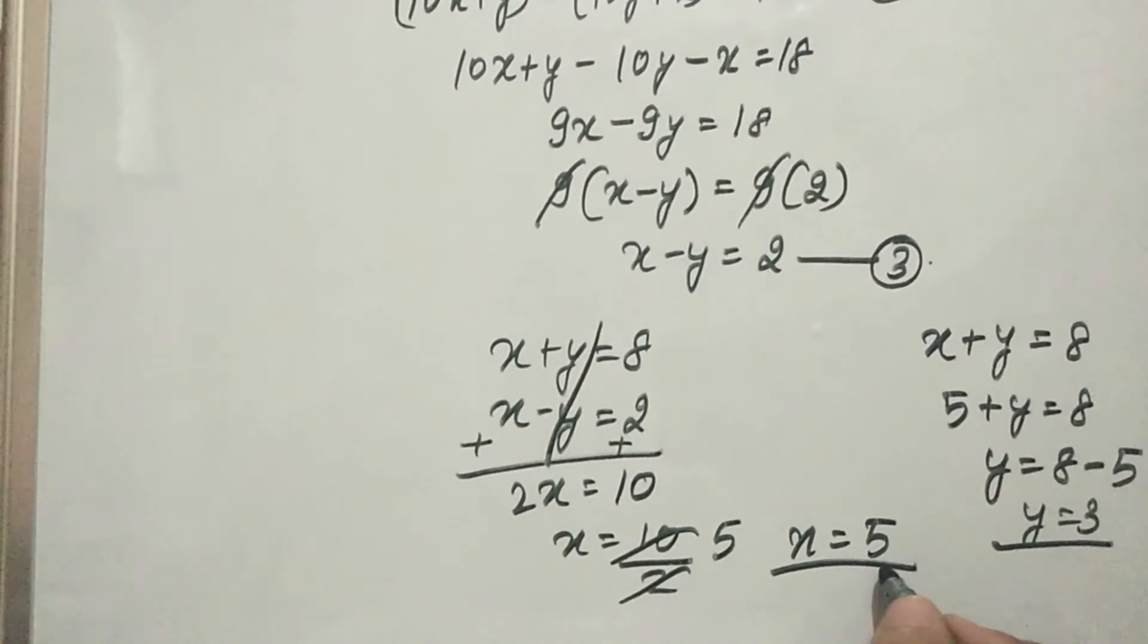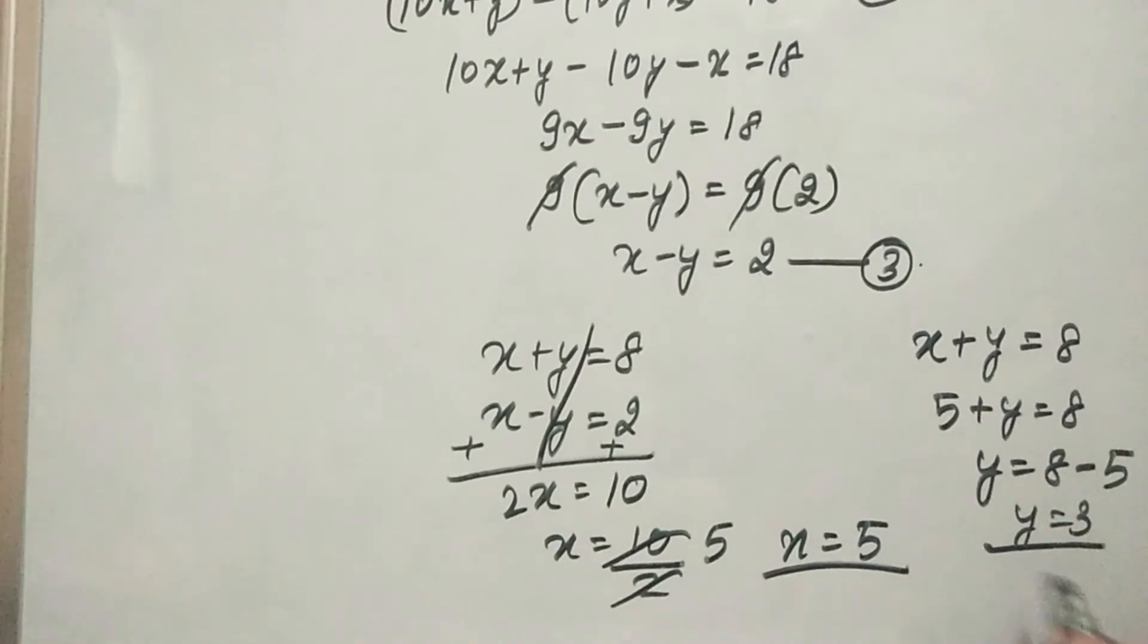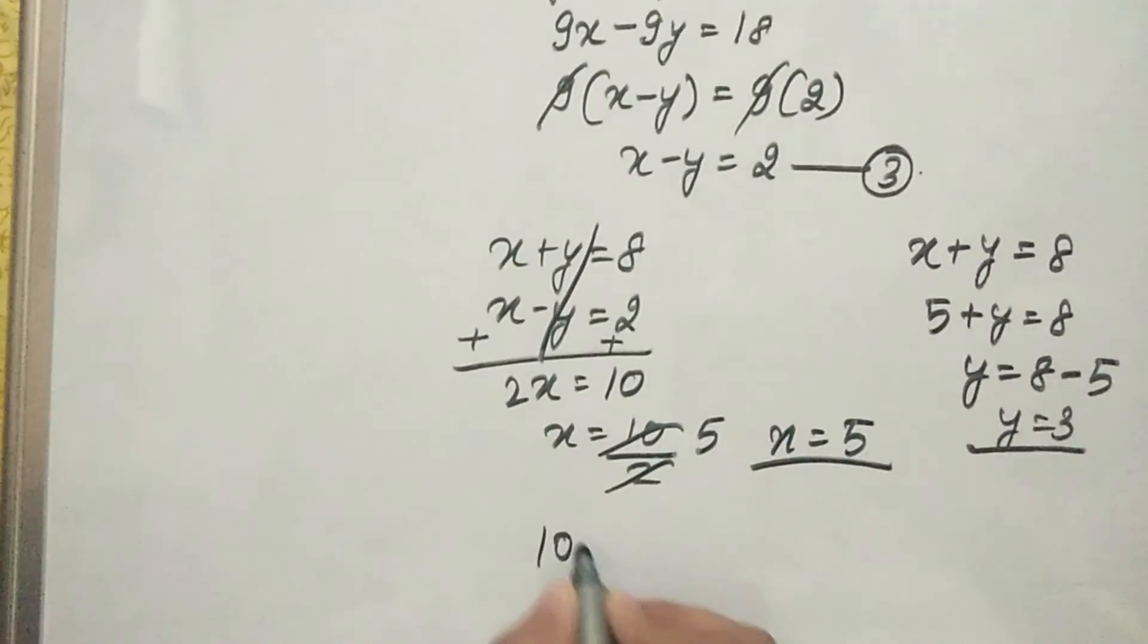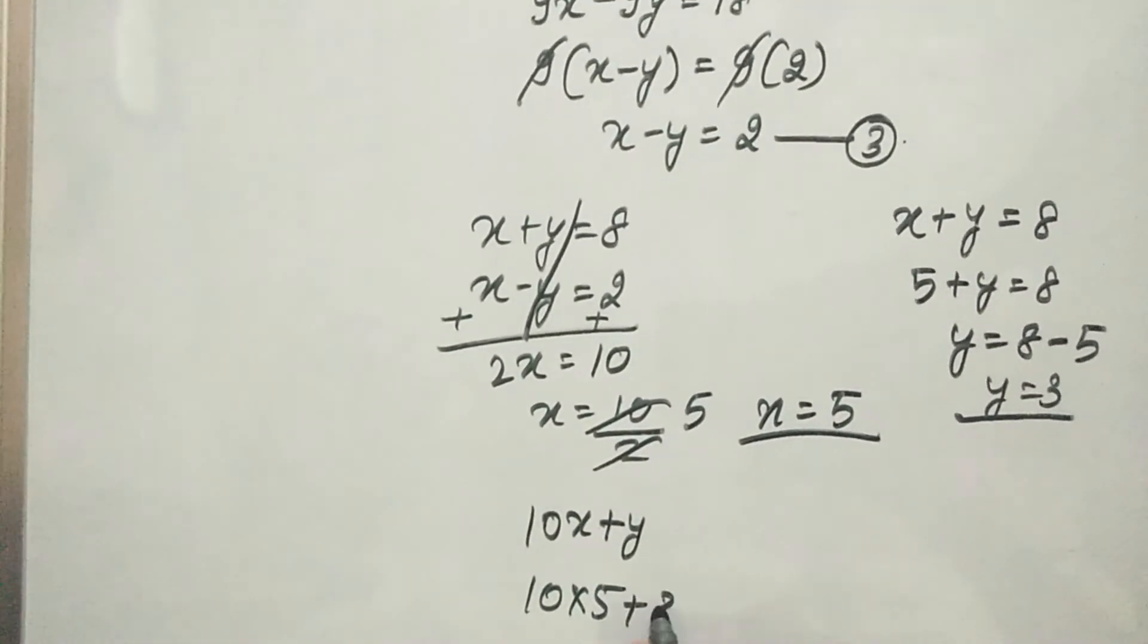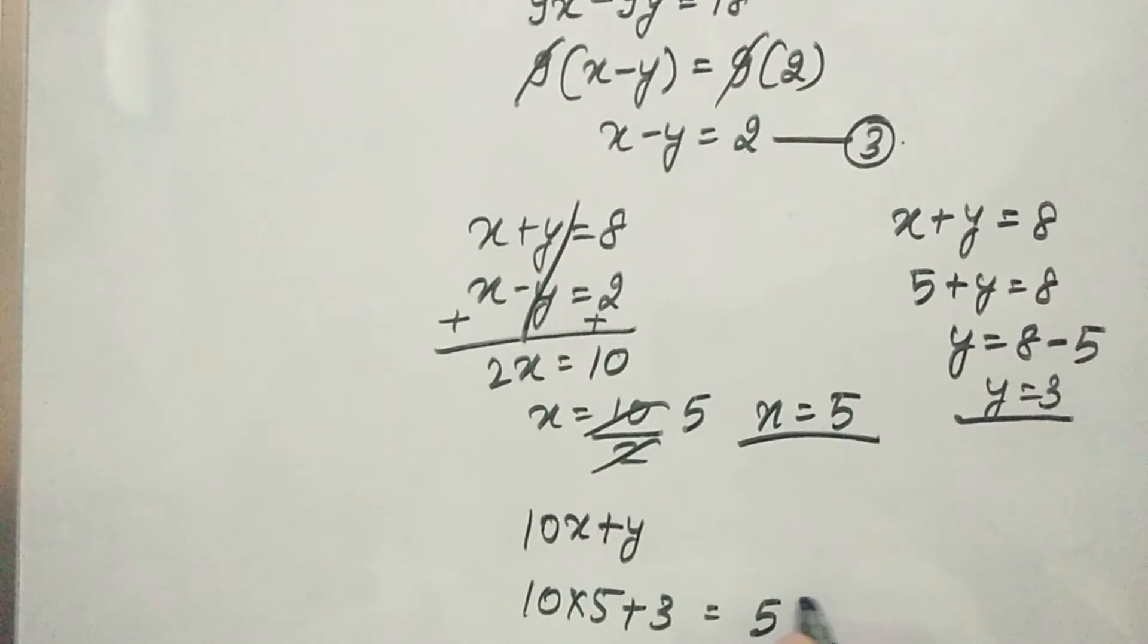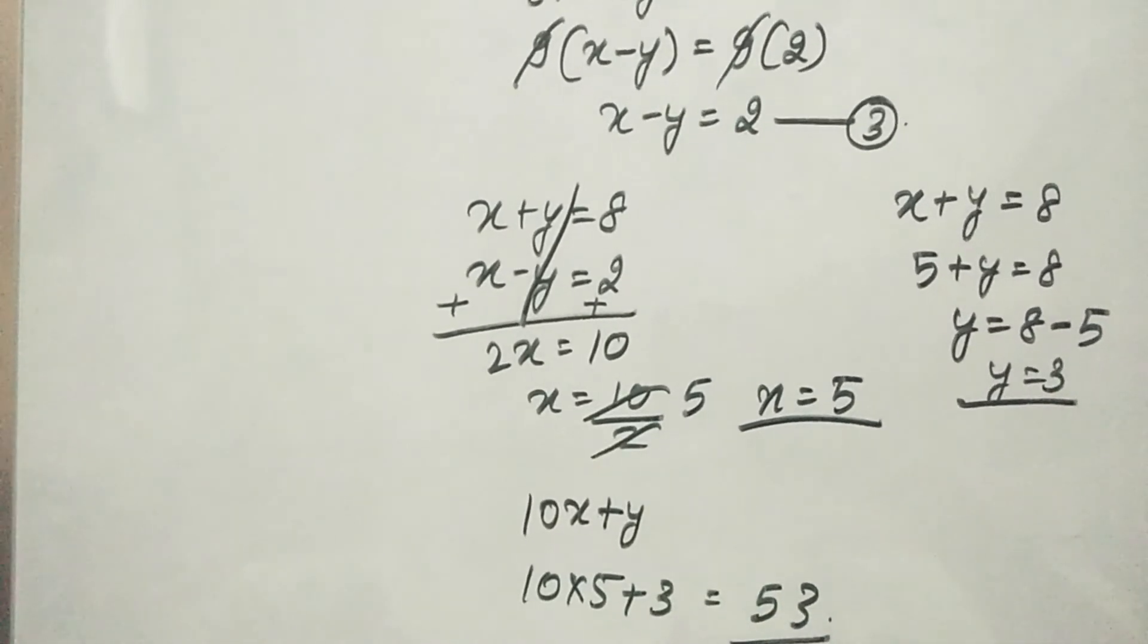So x value is 5 and y value is 3. The original number is 10x plus y, so 10 times 5 plus 3 equals 53. So our original number is 53.